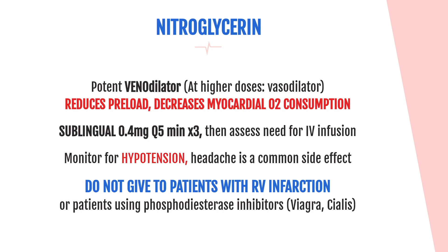Initial nitro treatment is sublingual, dosed at 0.4 mg every five minutes times three doses. If not providing relief, assess the need for a continuous drip. Monitor for hypotension — you do not want to decrease perfusion to the coronary arteries — and headaches, which are a common side effect. Do not give nitro or any preload reducer to patients with an RV infarction, as you need those ventricles full and pumping blood forward. Also do not give nitroglycerin to patients using phosphodiesterase inhibitors such as Viagra (sildenafil) or Cialis.